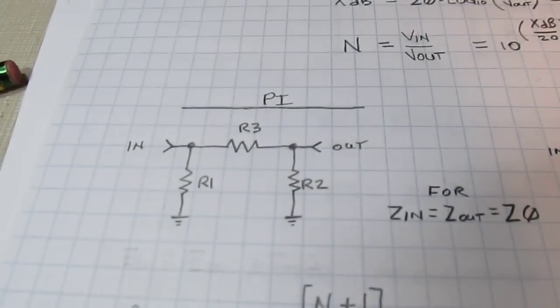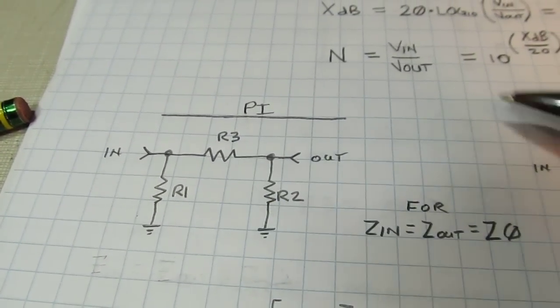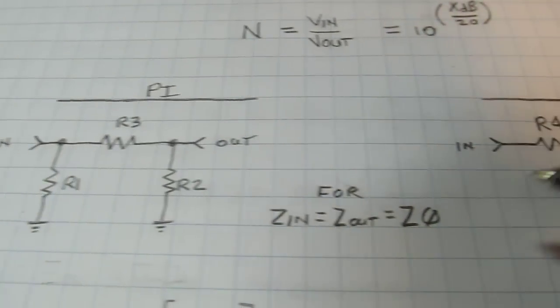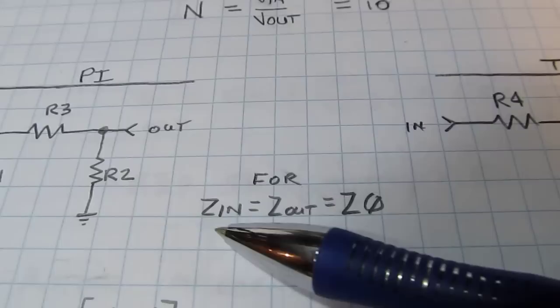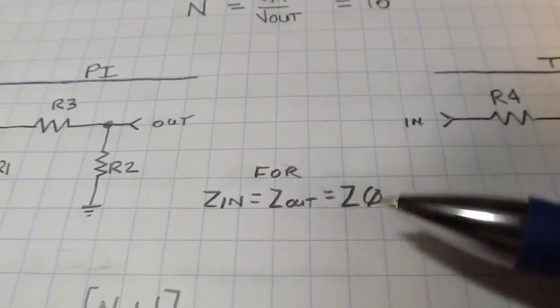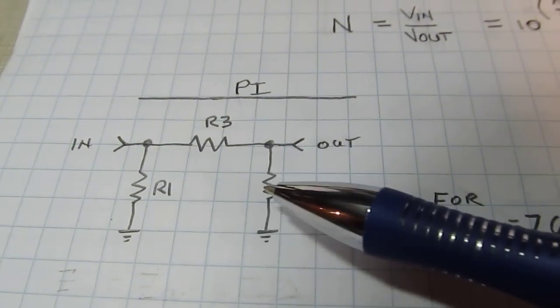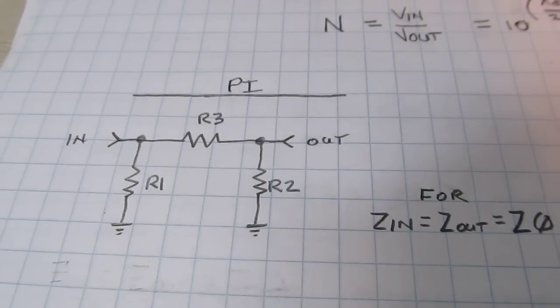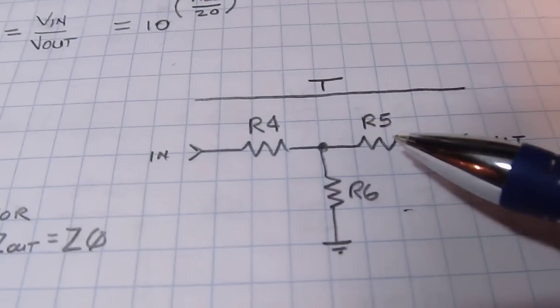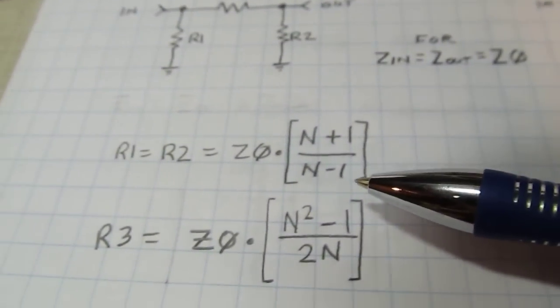So that's the basic equations. The basic structures for a pi and T attenuator are shown here, and you can see why they're called a pi attenuator or a T attenuator - the T attenuator looks like the letter T and the pi attenuator looks like the symbol pi. In these cases where the input and output impedance is equal to Z0, which is 50 ohms, on the pi attenuator it means that these two resistors R1 and R2 will be the same. On the T attenuator it means that these two resistors will be the same.